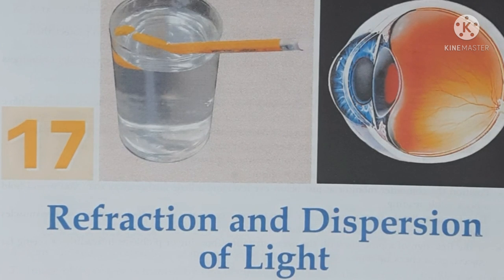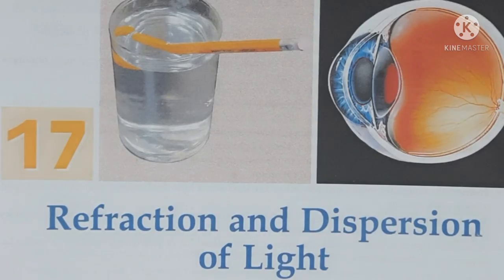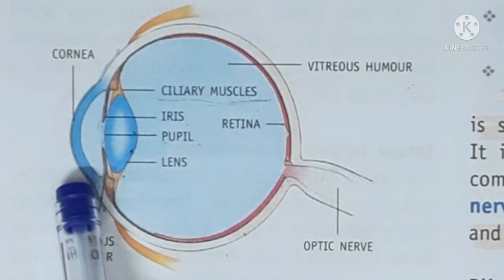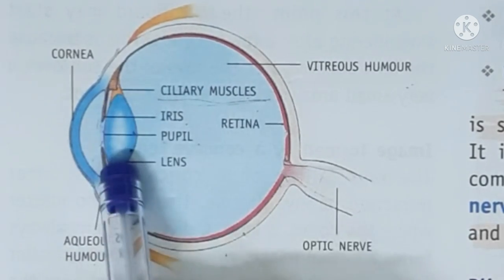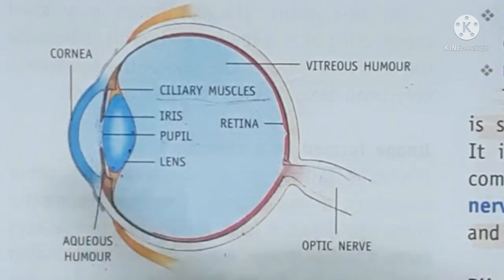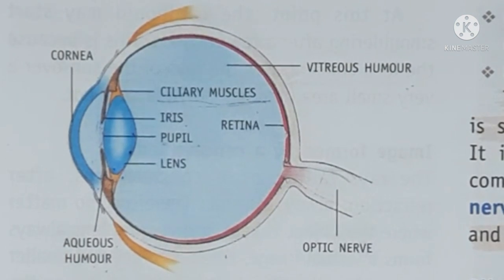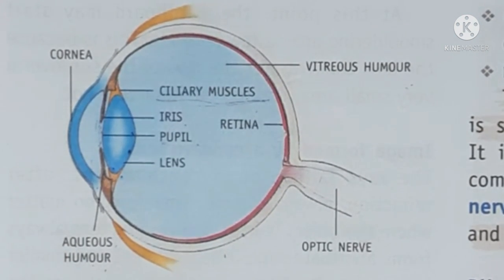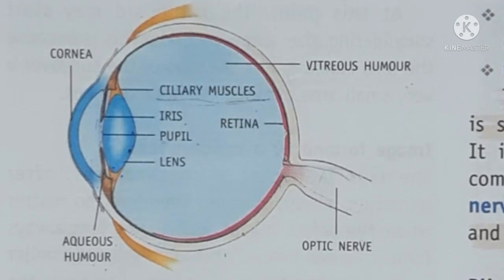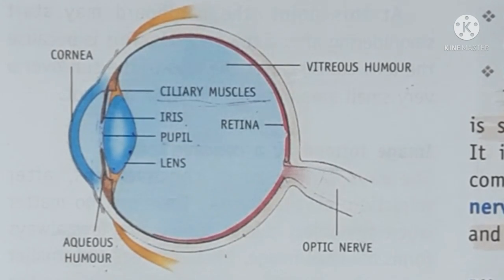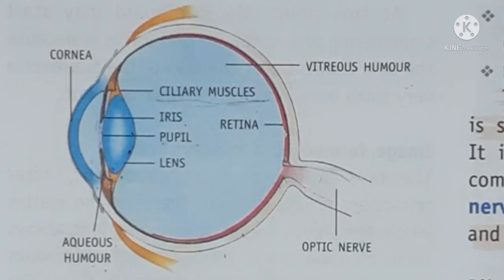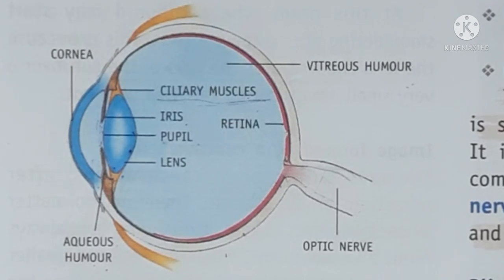So basically us particular topic ko bohot simplify karne ke liye taaki aap easily yaad kar sake — jo har part hai eye ka, like what is cornea, function of cornea, then iris, then pupil, then ciliary muscles, retina, jitne bhi rod and cone cells, nerve cells and the optic nerves — each and everything ka jo function hota hai, woh maine ek note prepare kar diya hai. Aur woh jo notes hain, they are very easy and simple to learn. So woh mere website pe aapko mil jayenge. Main aapne website ka link aapko description box mein de dungi, agar aap chahte hain toh aap ja ke usko visit kar sakte hain.